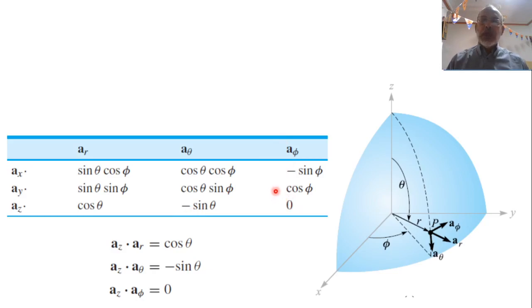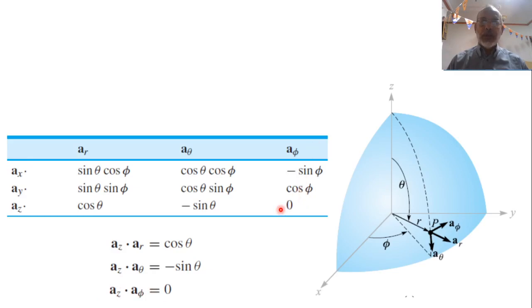On the other hand, if the problem is given in â_x, â_y, â_z and needs to be expressed in spherical coordinates: â_x = â_r sinθ cosφ + â_θ cosθ cosφ − â_φ sinφ. Also, â_z · â_r = cosθ, â_z · â_θ = −sinθ, and â_z · â_φ = 0. These transform unit vectors between spherical and Cartesian systems.